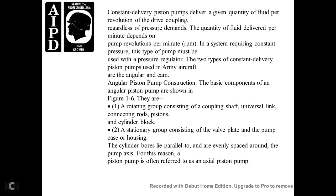Constant-Delivery Pumps. Constant-delivery pistons deliver a given quantity of fluid per revolution regardless of pressure. The quantity of fluid delivered per minute depends on the pump's revolutions per minute. When the system requires constant pressure, the type of flow must be pressure-regulated. Two types of constant-delivery piston pumps used in aircraft are the angular cam and the angular piston pump. The basic components of the angular piston pump are shown in figure 1-6: a rotating group consisting of coupling shaft, universal link, connecting rods, piston, and cylinder block; and a stationary group consisting of the valve plate, pump case, and housing. The cylinder bores lie parallel to and evenly spaced around the pump axis — this is why the piston pump is often referred to as an axial piston pump.